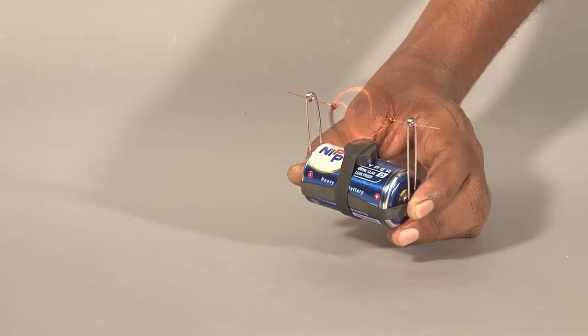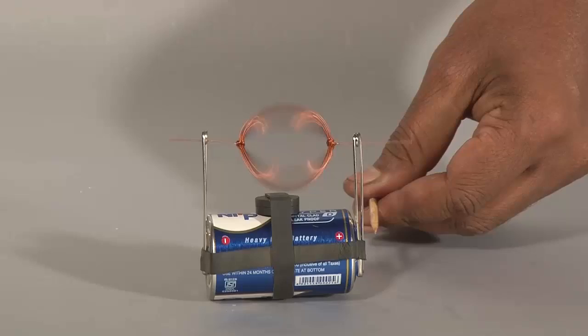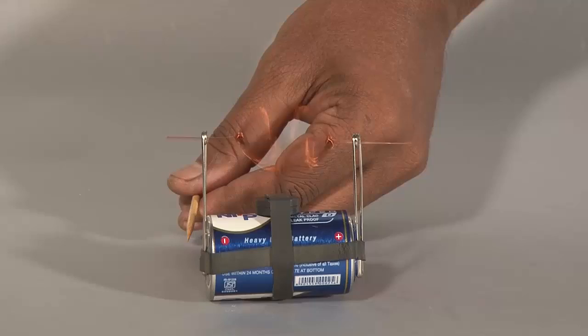An electric DC motor is a device that converts electric energy into mechanical energy. When the coil is connected to the battery, current passes through it, which eventually turns it into an electromagnet. This electromagnet has its own south and north pole.